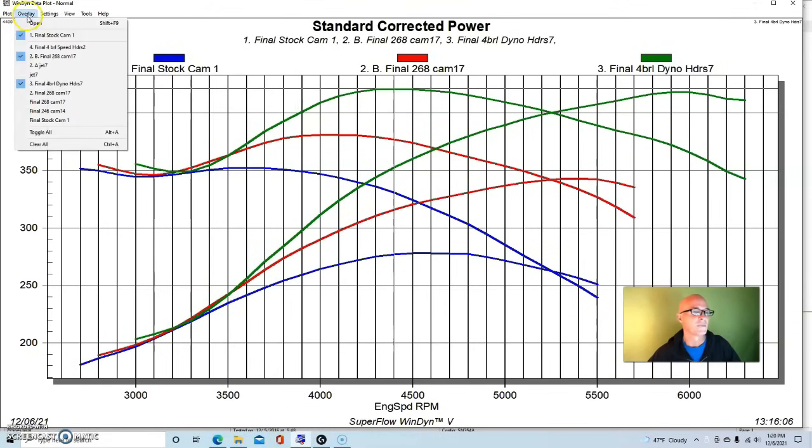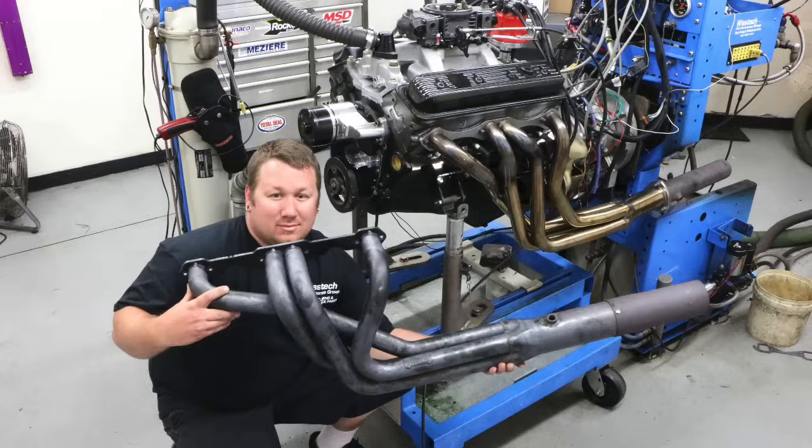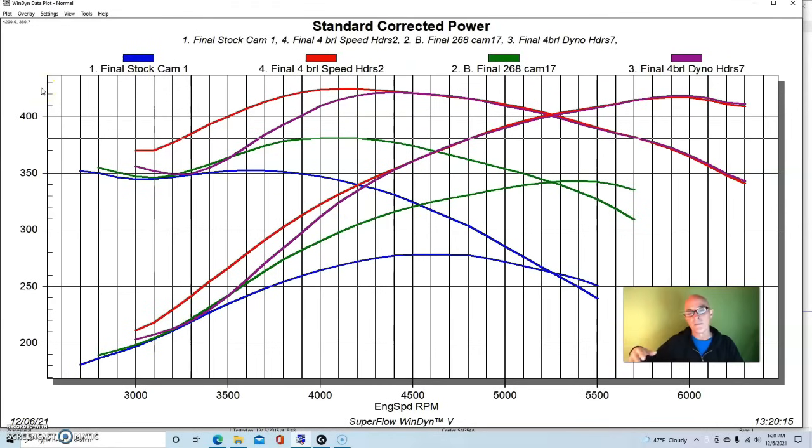The one cool trick I want to show you before we get going is take a look at what we did by changing the header design. And this was the chassis header that they were using in that chassis. It had a smaller primary than the headers that we used.